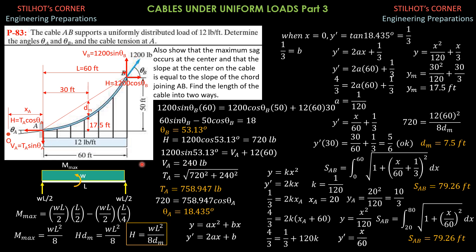Therefore, the tension at A is the square root of the horizontal component squared plus the vertical component squared, giving 758.947 pounds. Theta A can now be computed: tangent of theta A equals the vertical component 240 over 720, which is 1/3. Inverse tangent of 1/3 is 18.45 degrees. Another way: cosine theta A equals 720 over 758.947, and inverse cosine of that ratio also gives 18.45 degrees.